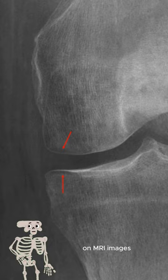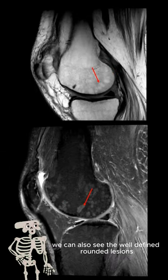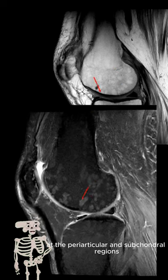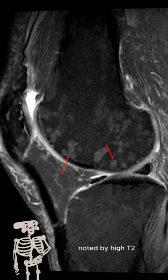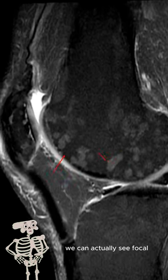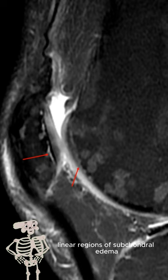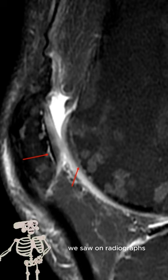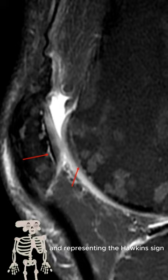On MRI images, we can also see the well-defined rounded lesions at the periarticular and subchondral regions, noted by high T2 signal intensity. If we look closer, we can actually see focal linear regions of subchondral edema, analogous to the subchondral lucency we saw on radiographs, representing the Hawking sign.